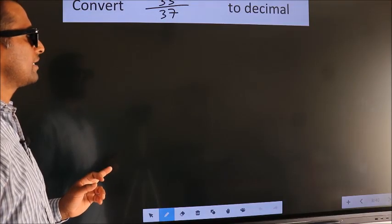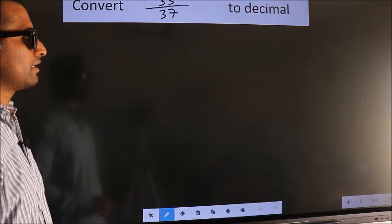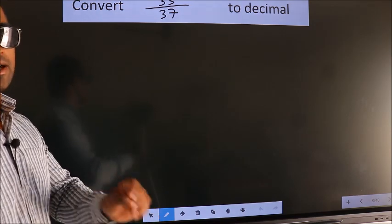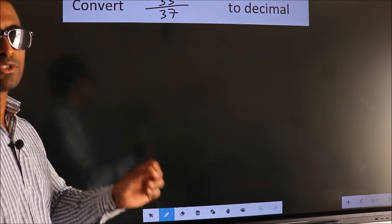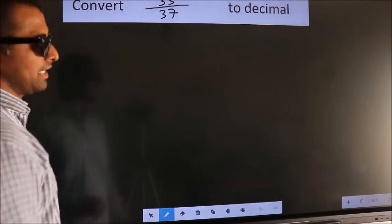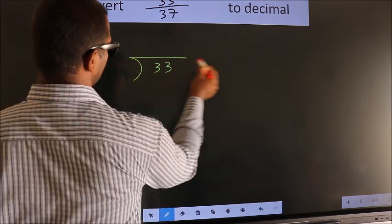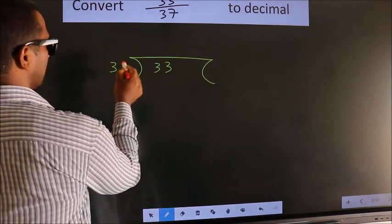Convert 33 by 37 to decimal. To convert this to decimal, we have to divide, and to divide we should frame it in this way: 33 here, 37 here.